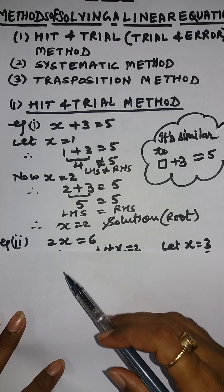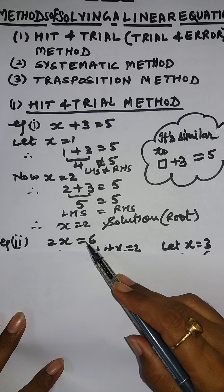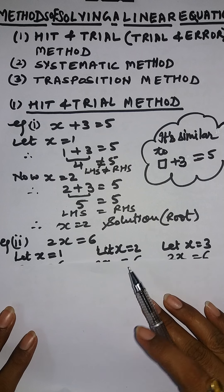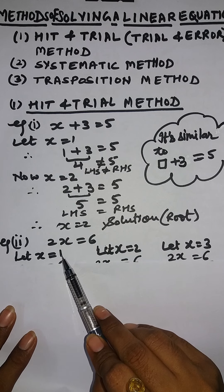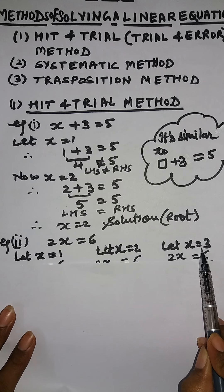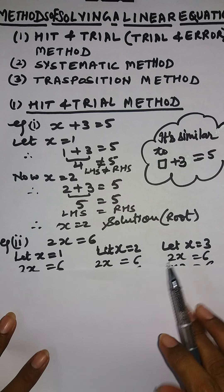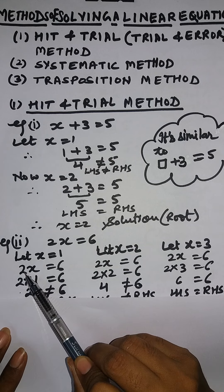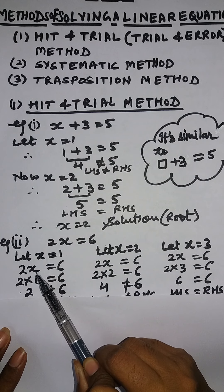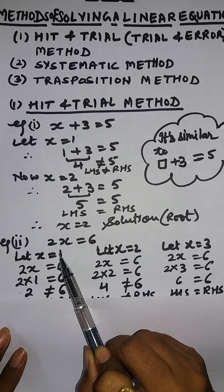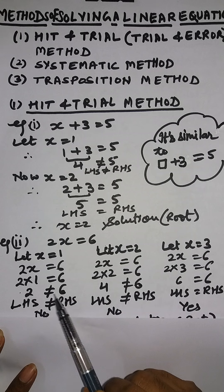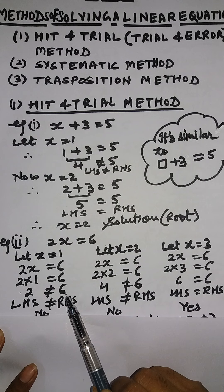Let us take another example: 2x is equal to 6. We consider x equal to 1, 2, and 3 one by one. For x equal to 1, 2 multiplied by 1 gives 2, which is not equal to 6. So LHS is not equal to RHS.